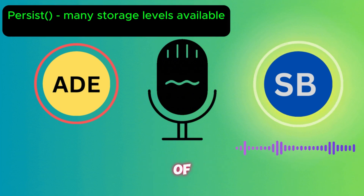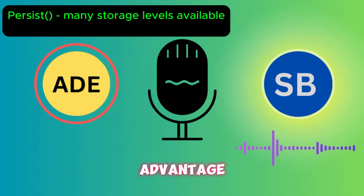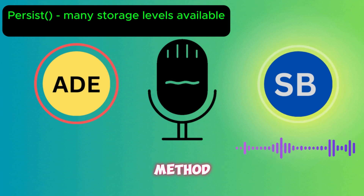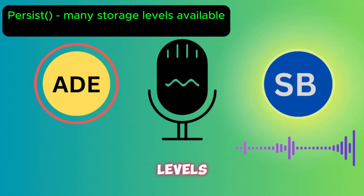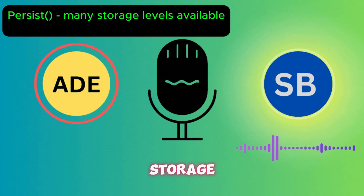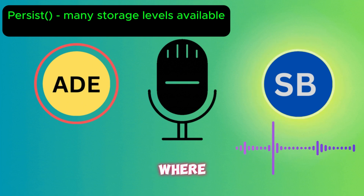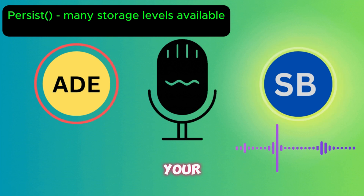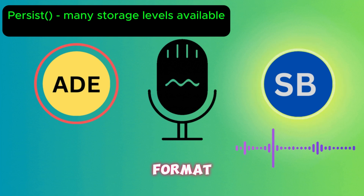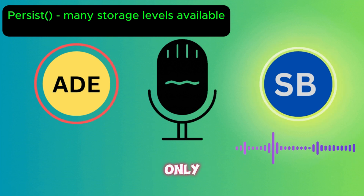The second option is the persist method, which is another form of the cache method. The main advantage of persist is that it allows you to specify different storage levels. In Spark, there are multiple storage levels to specify where and in what format you want to store your data.